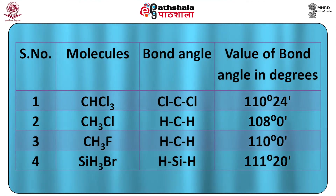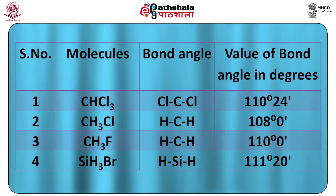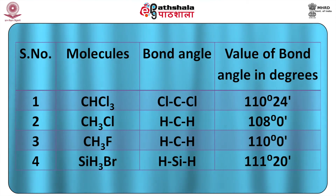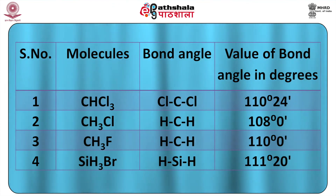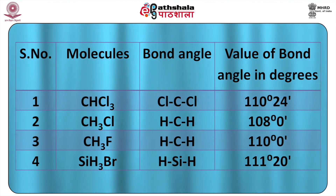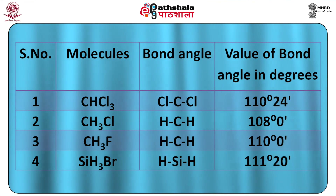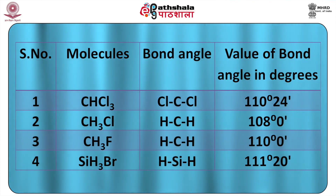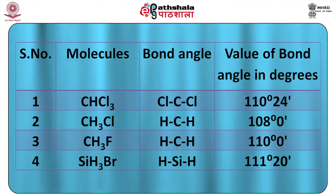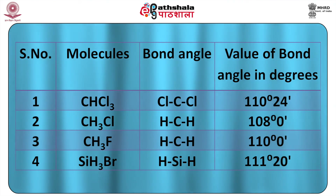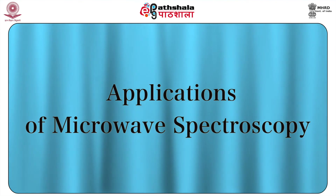A second table shows bond angles for some molecules. For CHCl3, the bond angle between Cl–C–Cl is 110 degrees and 24 minutes. For CH3Cl, the H–C–H bond angle is 108 degrees, and for CH3F the angle is 110 degrees. Now we shall see the applications of microwave spectroscopy.